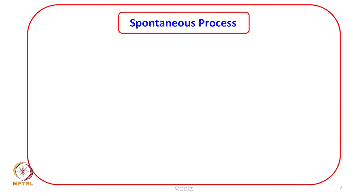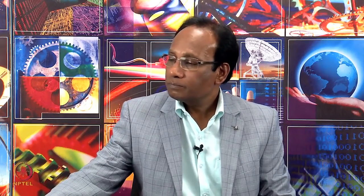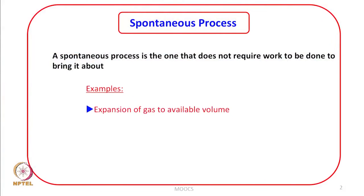As the name suggests, a spontaneous process is one which does not require any work to be brought about. We do not have to do any work when the process happens spontaneously. There are various examples. The first example is the expansion of gas to available volume. If we have a gas in a container and allow the lid to be opened, the gas will expand to whatever volume is available to it. No work is required.